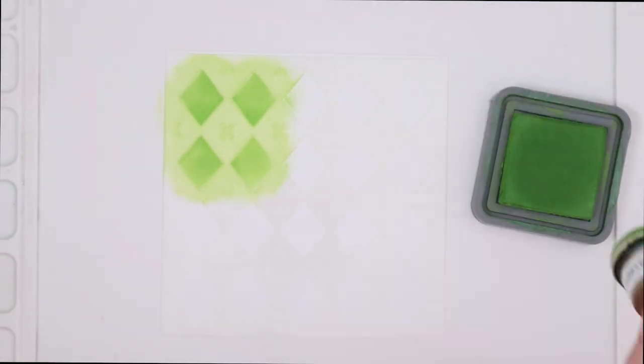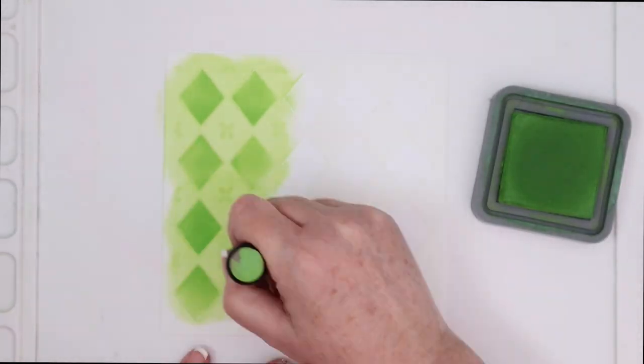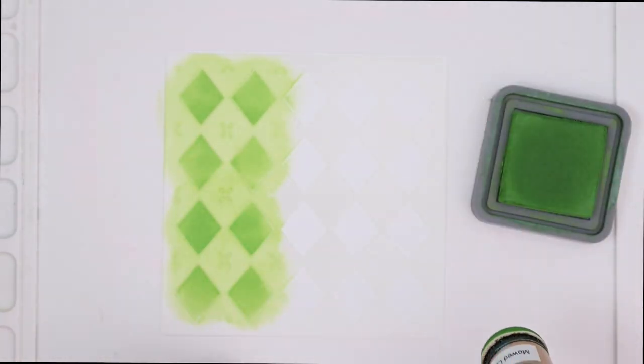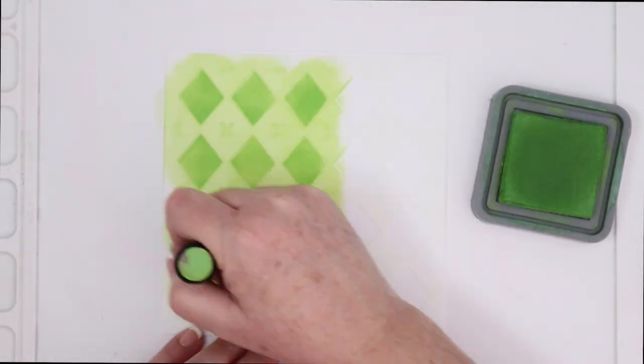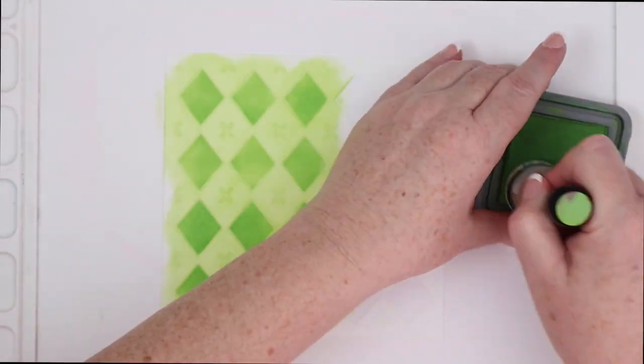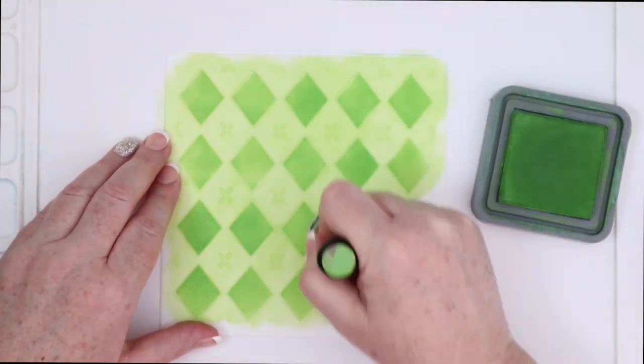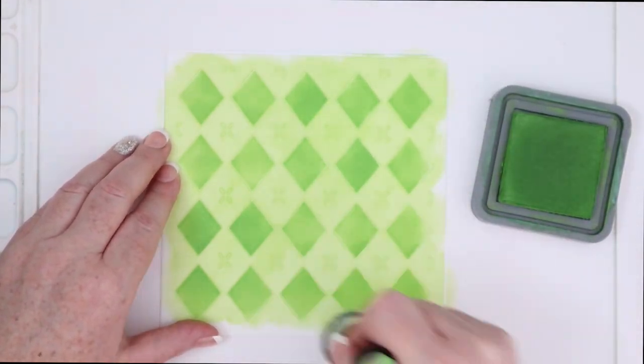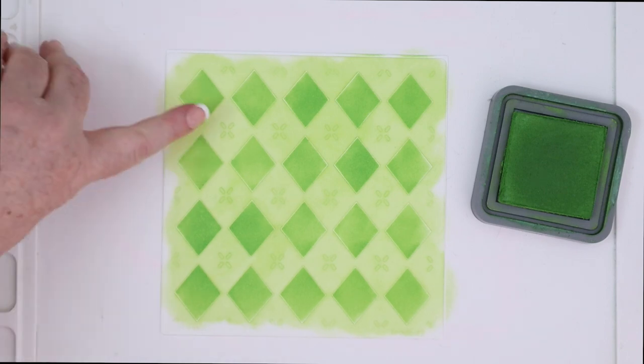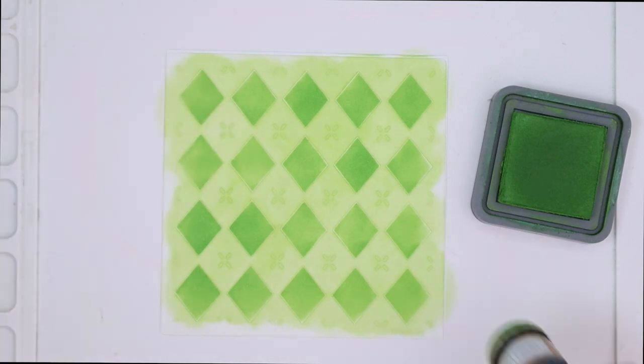So for this first version of layering the ink and the glitz gels, I'm going to first ink blend the first stencil. This is a two-step stencil set from Newton's Nook to create an argyle look, which is one of my favorite patterns. I love plaids. I love diamonds. I love all kinds of things like that.